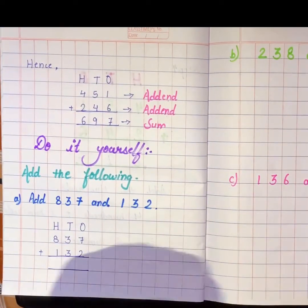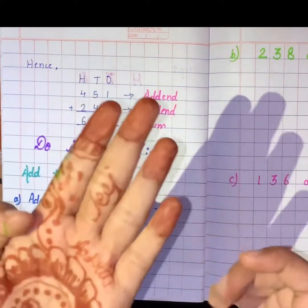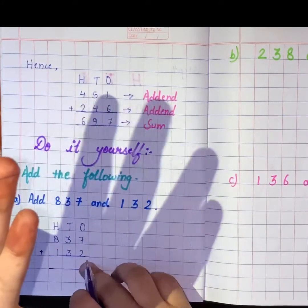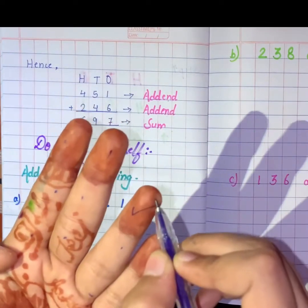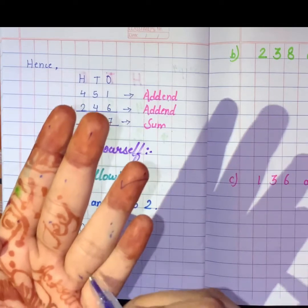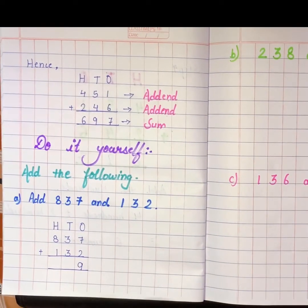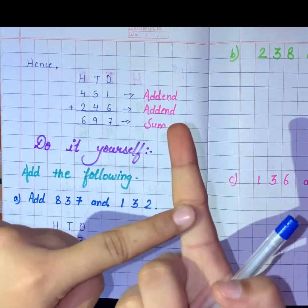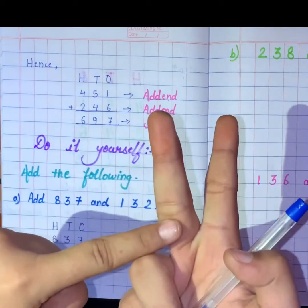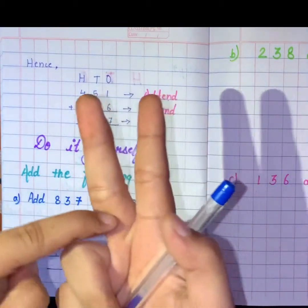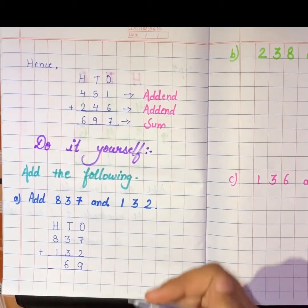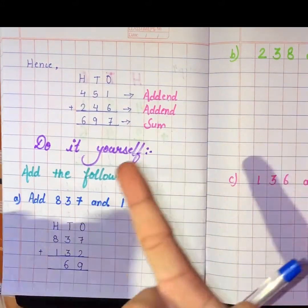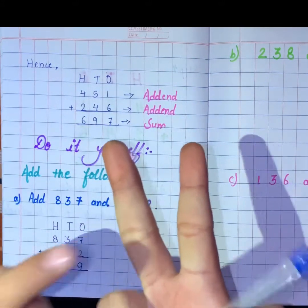Let's add the ones place: 7 plus 2 equals 9. Now add the tens place: 3 plus 3 equals 6. Now add the hundreds place: 8 plus 1 equals 9. So 837 plus 132 equals 969.